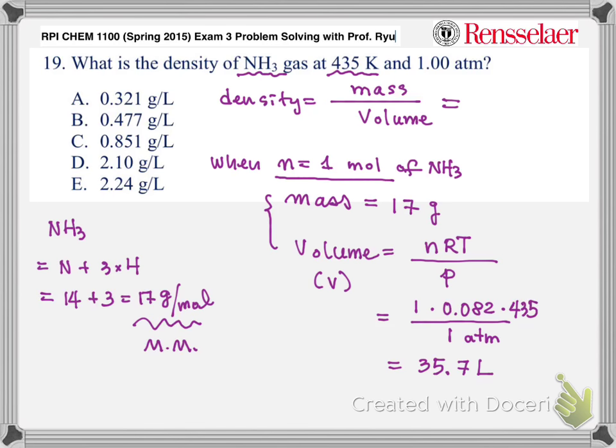Okay, so now we have an example of 17 grams, 35.7 liter. That will give me the answer for 0.477 gram per liter. So the answer is B.